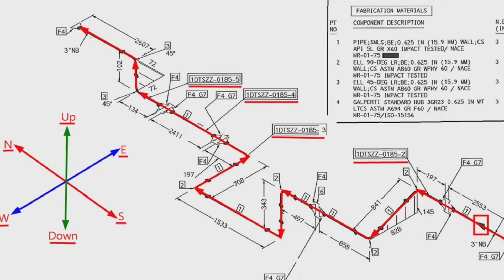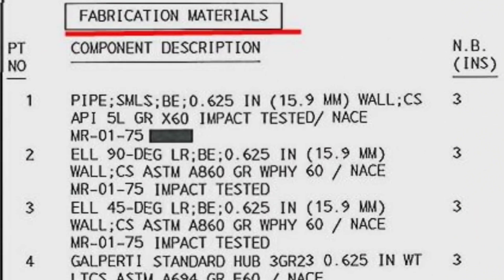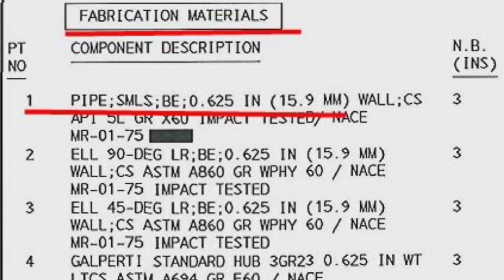Let's learn the materials used in the pipeline. This is the list of materials for fabrication. Detail number one was used in several places in the pipe drawing. Item number one pipe: schedule 0.625 inch or 15.9 millimeters wall thickness, material is carbon steel, size is three inch.